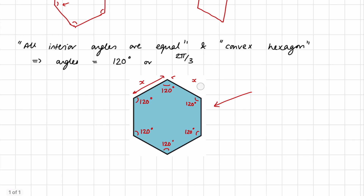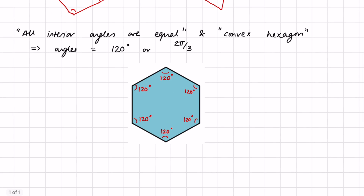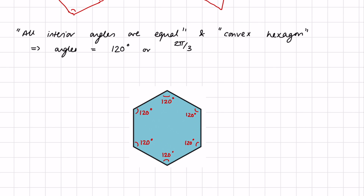So we know we want a convex hexagon where each angle is 120 degrees, but the side lengths are not all equal — they are one through six. There is a really nice trick: we can extend each side of the hexagon to form equilateral triangles at each corner.